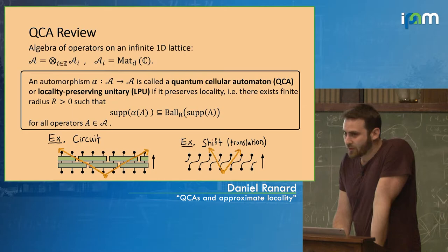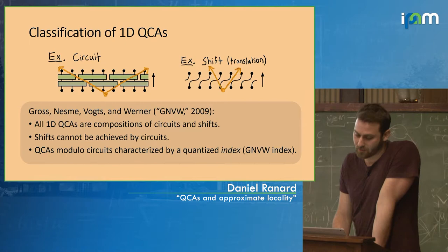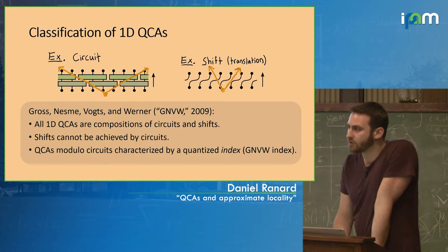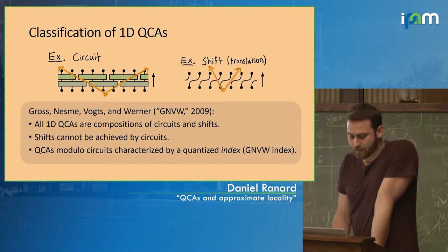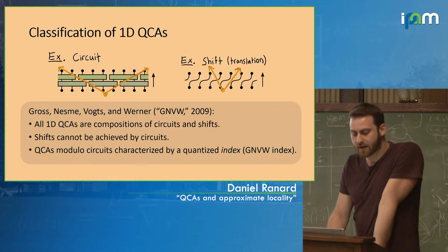Two great examples are circuits or shifts — both are QCAs. You already learned the GNVW classification, which says that all 1D QCAs are compositions of circuits and shifts. The shift cannot be achieved by a circuit. When we talk about classifying QCAs, at least in this one-dimensional context, we're going to be talking about classifying the group of QCAs modulo circuits.